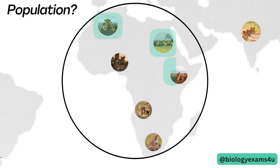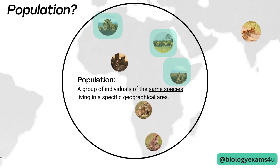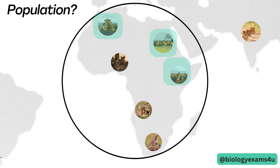There is pride 1, pride 2, pride 3, and so on. These can all be considered as populations. A population is a group of individuals of the same species living in a specific geographical area. Different populations of lions are there in this national park, interacting with each other and competing for common resources like food, territory, etc.